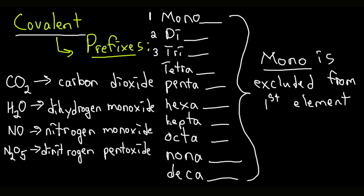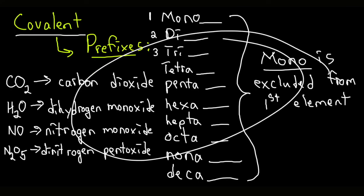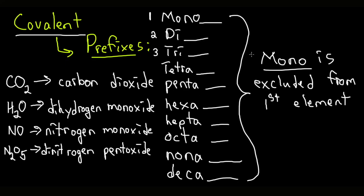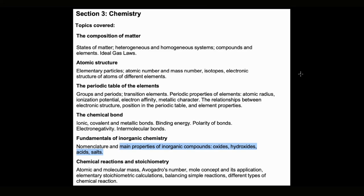After learning all of this, you should be able to name anything from inorganic chemistry. This concludes our lecture for today. Watch the next video on the main properties of inorganic compounds, which will include oxides, hydroxides, acids, and salts.